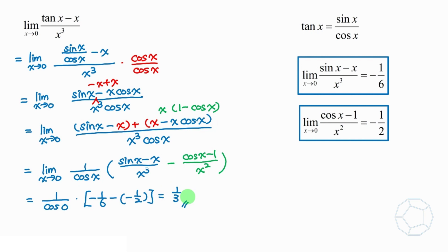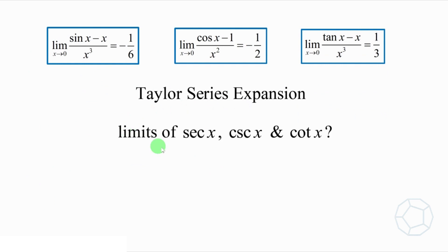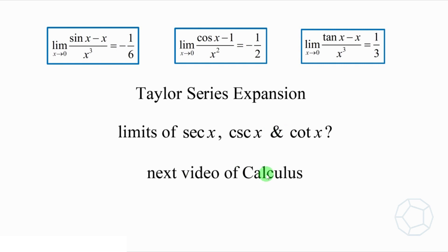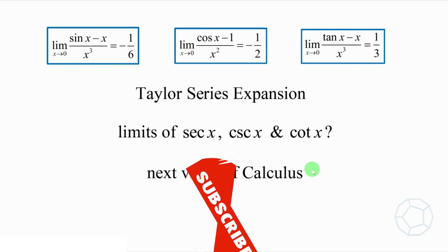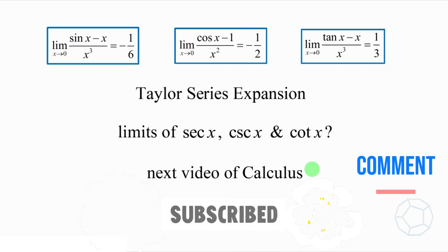So we're finished with the limits of sine x, cosine x, and tangent x. Now, I have a question for you: could you start with the Taylor series expansion to obtain similar limits of secant x, cosecant x, and cotangent x, and prove them with basic tools only? Leave your ideas in the comment section, and I'm going to talk about that in the next video of calculus. I hope you enjoyed this video — please give me a like, share, and subscribe to my channel. I'm happy to see your views in the comment section below. That's all I have for you today. I'll see you next time. Bye!